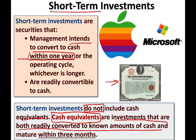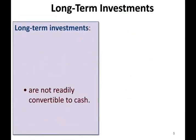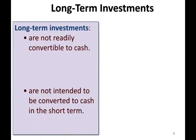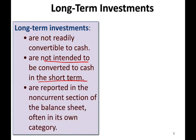Another example of cash equivalent is commercial paper, which is when large companies borrow money on a short-term basis. Long-term investments, obviously, are not readily convertible into cash — we plan to hold them longer than one year. That's why they are called non-current, and they are reported in the non-current or long-term section.